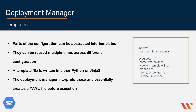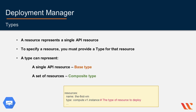The configuration can contain templates, which are parts of the configuration file that have been abstracted into individual building blocks. Templates are repeatable and can be reused across deployments as necessary. The template file is written in either Python or Jinja 2. The Deployment Manager system will interpret each template recursively and inline the results within the configuration file, so each template will eventually result in YAML syntax.